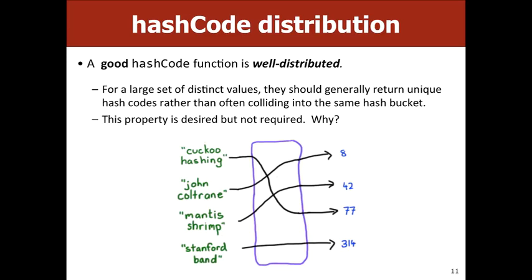Consistency is required — without it your hash set won't find elements. A desired but not strictly necessary quality is that hash values be well distributed, meaning the hash function uses a wide range of values, not just ten of them. Why does this matter? A better-distributed hash function gives better spread across buckets, so the actual linked list length stays close to the load factor. A poorly distributed one could give you a single linked list with all elements in one bucket — that's not O(1).